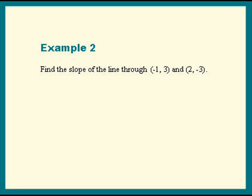The slope m is the change in the y's, -3 minus 3 divided by the change in the x's. Remember to start with the same point. So 2 minus (-1). We get -6 divided by 3. The answer is -2.